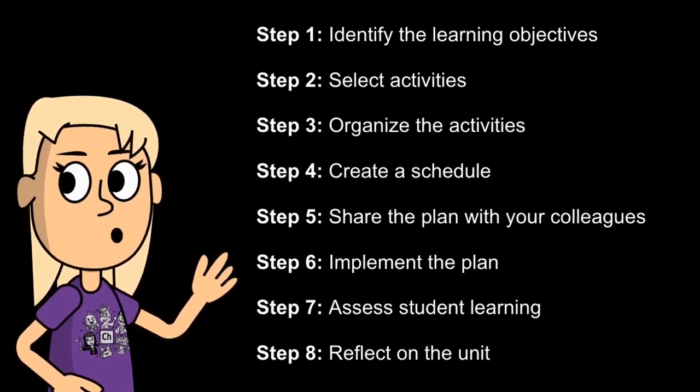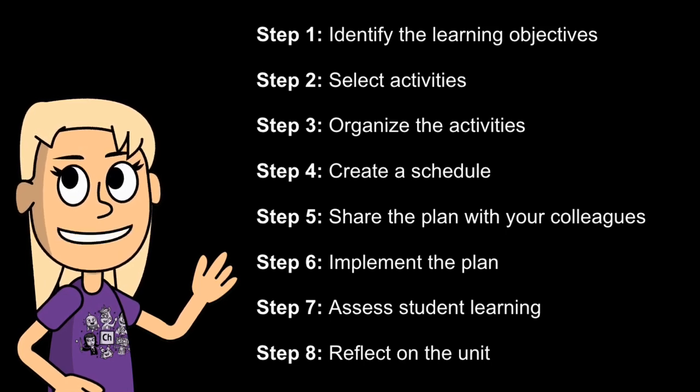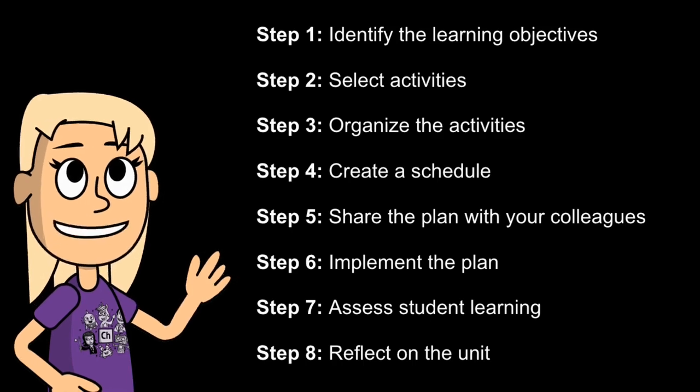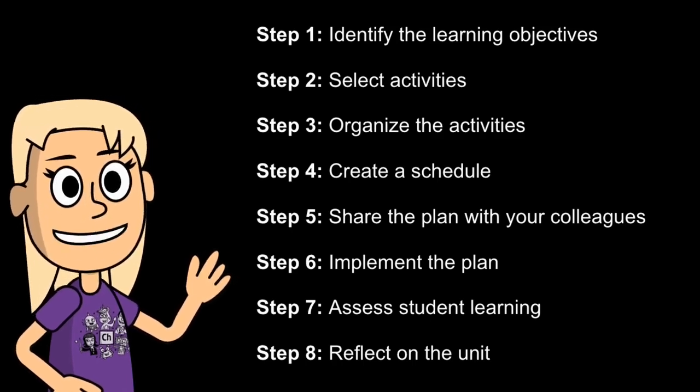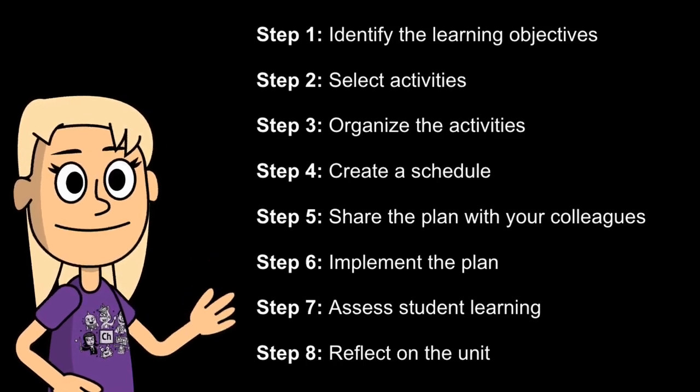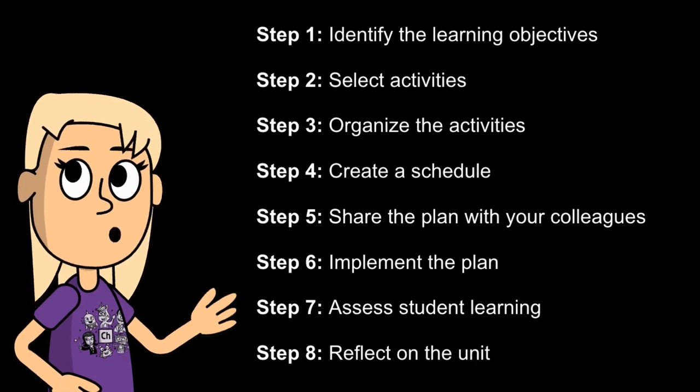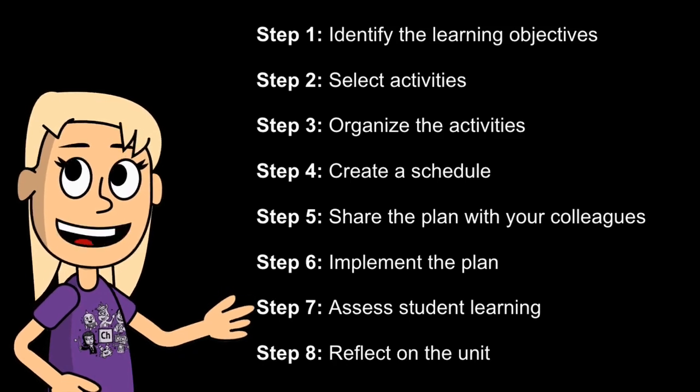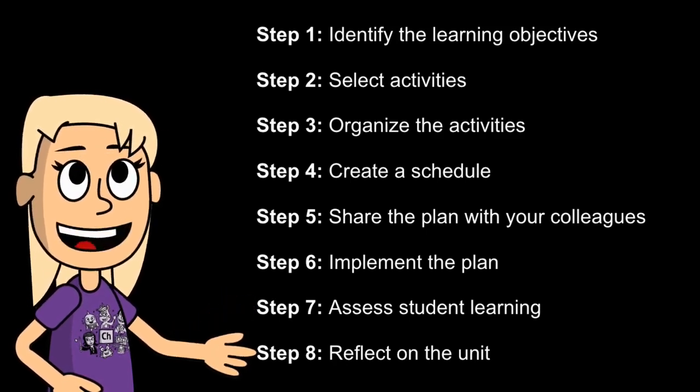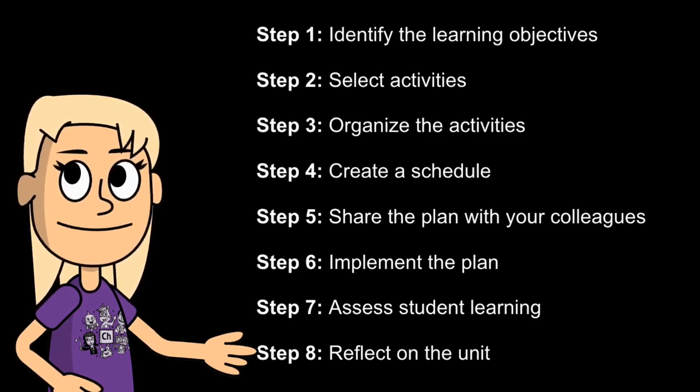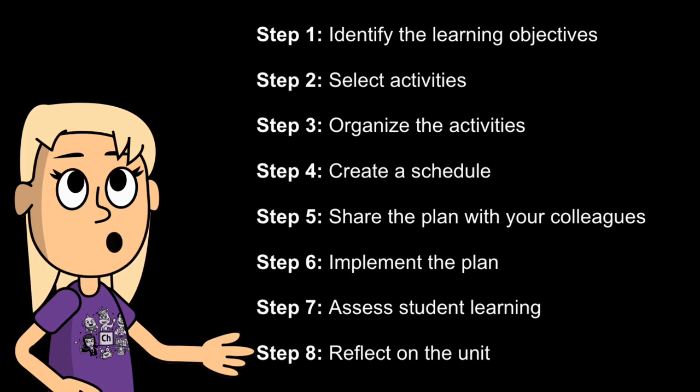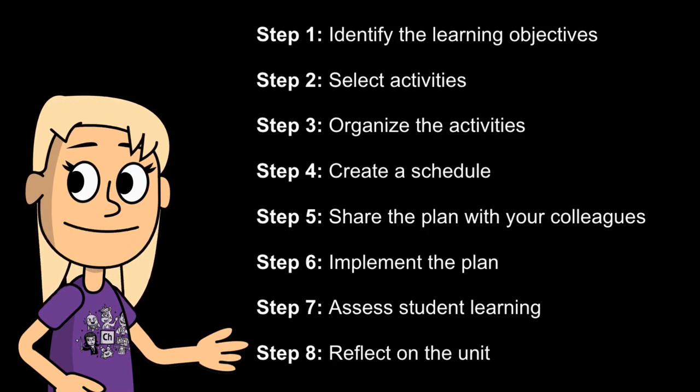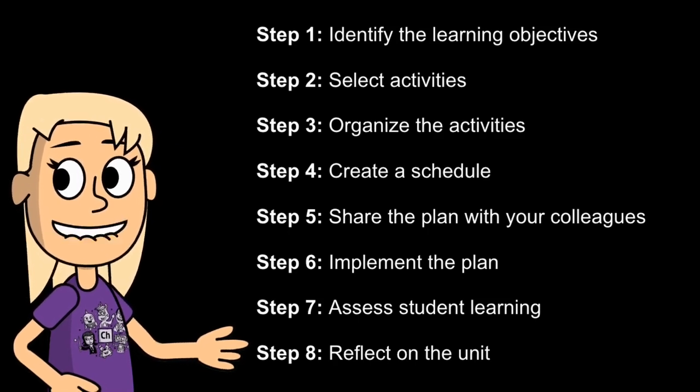Now step six is to implement the plan. Once you have a plan, it's time to implement it. Be sure to monitor student progress and make adjustments as needed. Step seven is to assess student learning. At the end of the unit, it's important to assess the student learning. This will help you determine how well students have met the learning objectives. And then the final step is to reflect on the unit. Once you have assessed student learning, it's important to reflect on the unit. What went well? What could be improved? This information will help you plan future units.